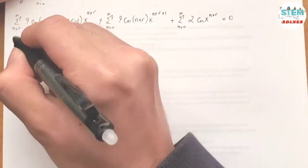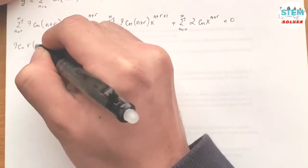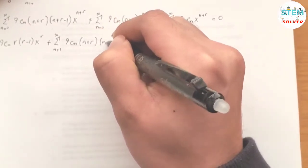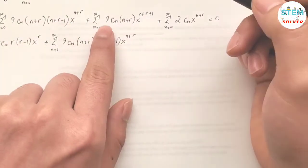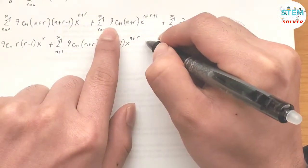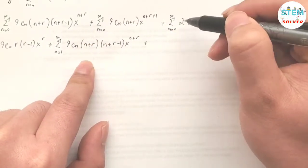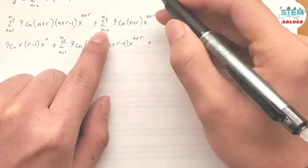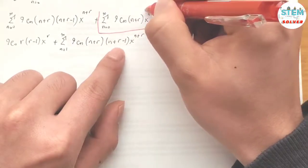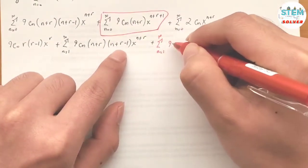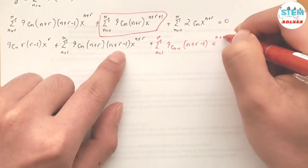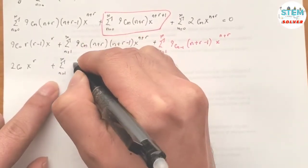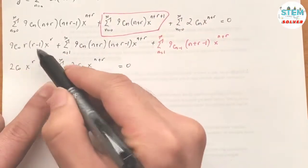For the first series at n=0, I have 9c₀ · r(r−1) · x^r, plus the remaining power series from n=1. For the second power series, I re-index it from n=1 to get 9cₙ₋₁(n+r−1) · x^(n+r). For the last series at n=0, I have 2c₀ · x^r, plus the power series from n=1 giving 2cₙ · x^(n+r) equals 0.